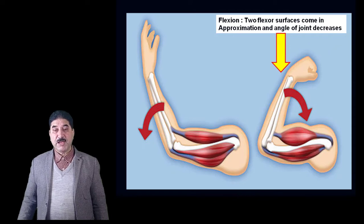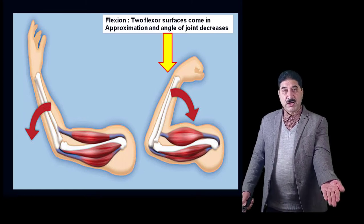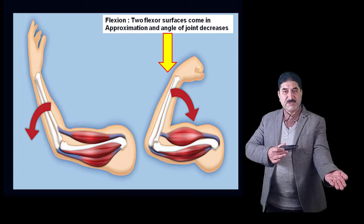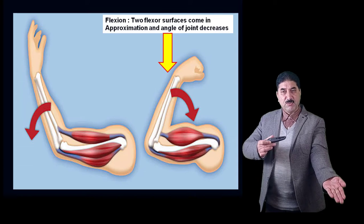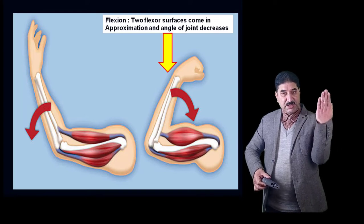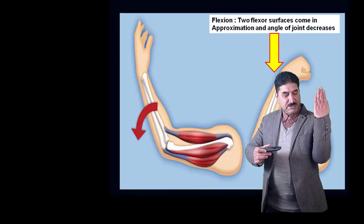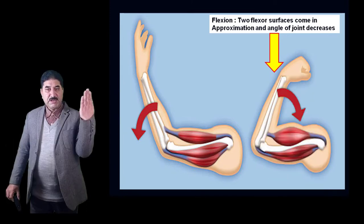Now let us come to terms related to movements of joints. Flexion is defined as a movement at a joint where two flexor surfaces come into approximation and the angle of the joint decreases. For example, at the elbow joint — a hinge variety of synovial joint — movement takes place at a transverse axis. During flexion, the anterior surfaces of the arm and forearm (the flexor surfaces) approach each other and the angle of the joint decreases from an obtuse angle, say 180 degrees, to an acute angle.